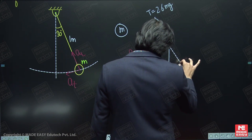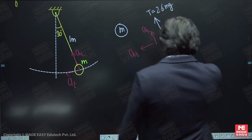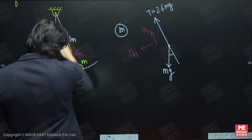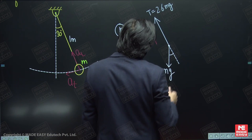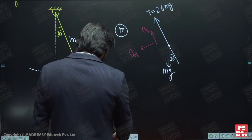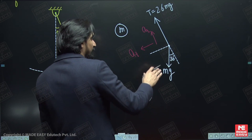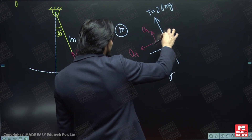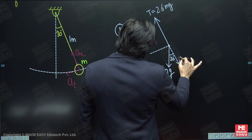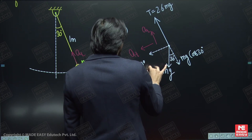The wire makes an angle of 30 degrees with the vertical, so tension acts along the wire at 30 degrees from the vertical. We need to break the forces into two directions: the radial direction and the tangential direction. Tension T is already along the radial direction, but mg acts vertically. So we resolve mg into components: mg cos 30 in the radial direction and mg sin 30 in the tangential direction.